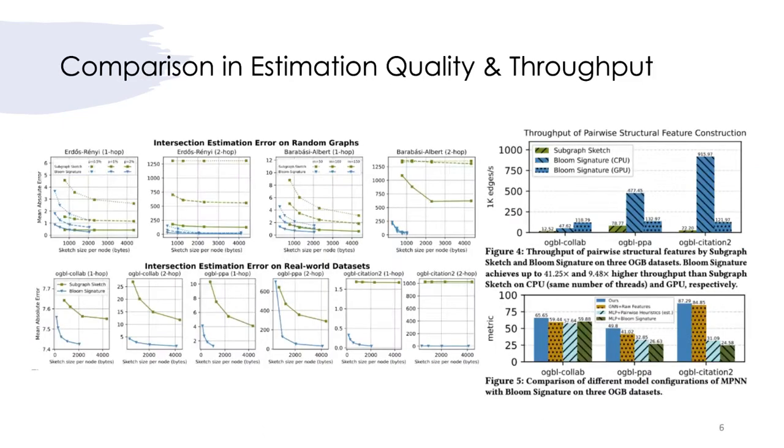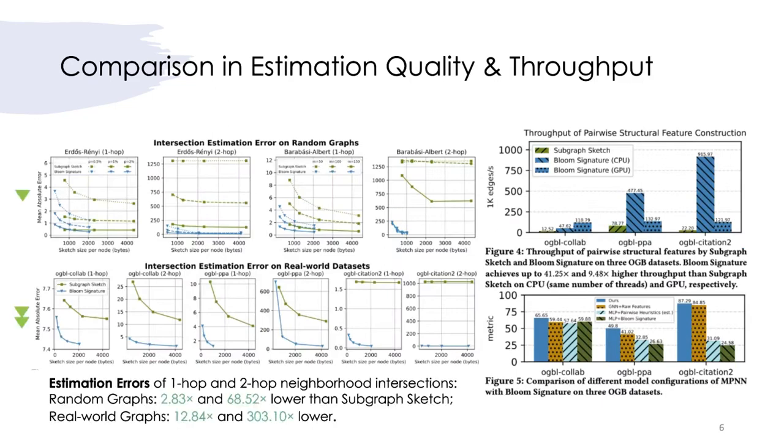We further study the estimation errors of bloom signature against baselines, and find that our method produces 3 to 300 times lower estimation errors, under the same memory budget.